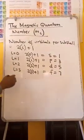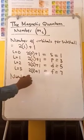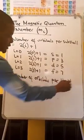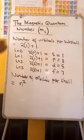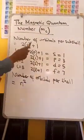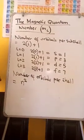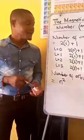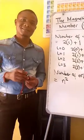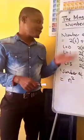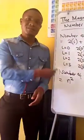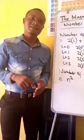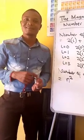The number of orbitals per shell is equal to n squared — you simply square the principal quantum number to get the number of orbitals in a shell. So this is how we can calculate the number of orbitals in subshells and in shells — we can use the formula or the tabular method. In the next tutorial, we'll look at quantum numbers and electronic configuration. Thank you.